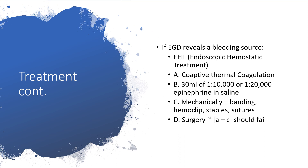Still on treatment: if through endoscopy like OGD reveals a bleeding source, then embark on endoscopic hemostatic treatment — a combination of thermal coagulation with 10 ml of 1 in 10,000 or 1 in 20,000 epinephrine in saline, and also mechanical methods: hemoclip, staples, or sutures. But if these should fail, then embark on surgery.